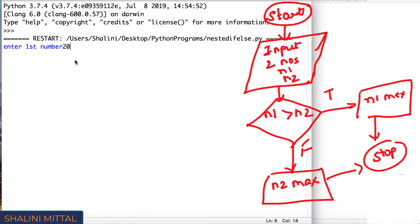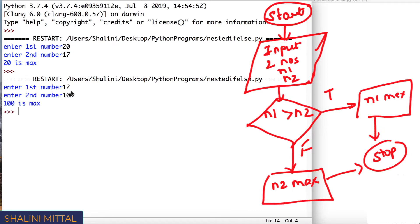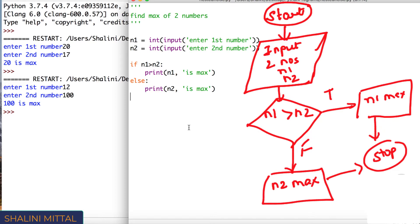So enter first number 20, enter second number 17. So you can see 20 is max, no issues, it works fine. If I run it again and if I enter the first number as 12 and the second number as 100, it prints 100 is maximum. So this part is working fine.